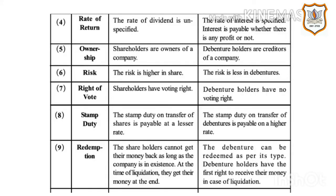Fifth point — Ownership: Shareholders are owners of a company, whereas debenture holders are creditors of a company. Sixth point — Risk: The risk is higher in shares and less in debentures. Seventh point — Right of Vote: Shareholders have voting rights, while debenture holders have no voting right.